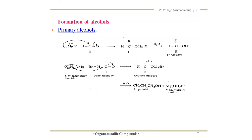Coming to primary alcohols — a primary alcohol can be prepared by the action of Grignard reagent on formaldehyde. The Grignard reagent carries a partial positive charge at the magnesium because it is an electropositive metal. R carries a partial negative charge. We know that the carbonyl group carries partial positive charge on carbon and partial negative charge on oxygen, due to the difference in electronegativities between carbon and oxygen.